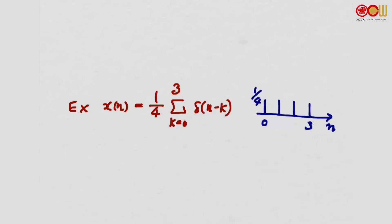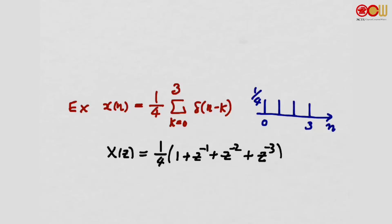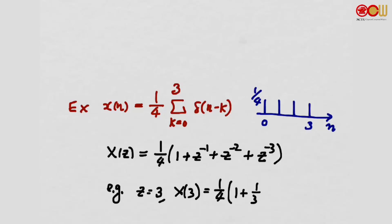For example, if x[n] is a four-point rectangular window with coefficients equal to 1 for n equals 0, 1, 2, 3, then X(z) by definition will be 1 plus z inverse plus z to the minus 2 plus z to the minus 3. For example, at z equals 3, X(3) would be 1 plus 1/3 plus (1/3) squared plus (1/3) cubed.